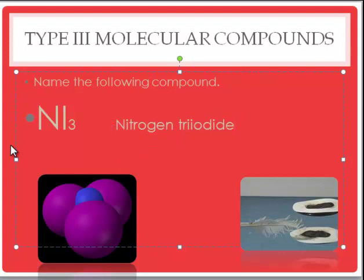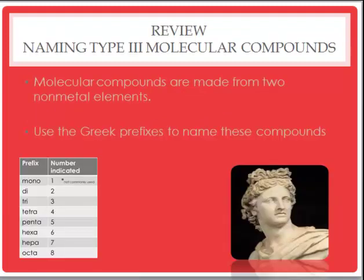So NI3 becomes nitrogen triiodide. Nitrogen triiodide is unique because it is very explosive — it will even be set off by the touch of a feather. In the picture you can see them touching it with a feather trying to get it to ignite. In conclusion, molecular compounds are made of two non-metal elements, and we use Greek prefixes to name them, like carbon dioxide. You should become familiar with the Greek prefixes, at least one through five or six, as those are most commonly used.